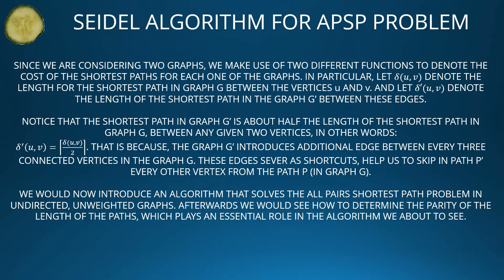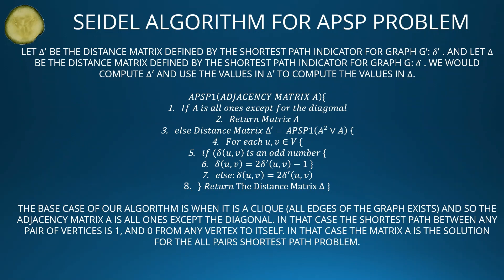We now introduce APSP1, an algorithm that solves the All-Pairs shortest path problem in undirected, unweighted graphs. Afterwards, we will see how to determine the parity of the path length, which plays an essential role. APSP1 receives adjacency matrix A. If A is all ones except the diagonal, return matrix A as the solution. Otherwise, compute distance matrix δ' = APSP1(A² ∪ A) recursively.